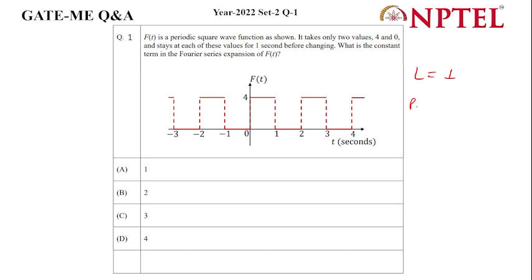Okay, so what is the formula for constant term? The constant term in Fourier series is given by a_0/2.